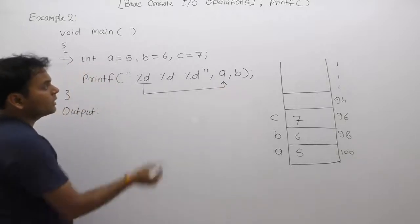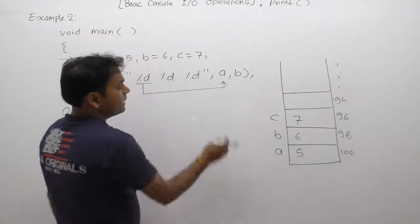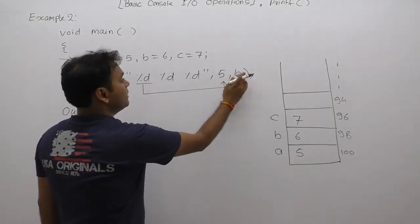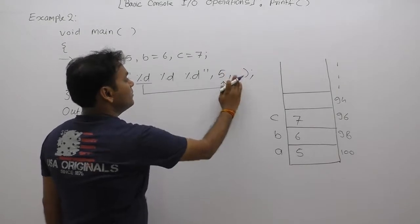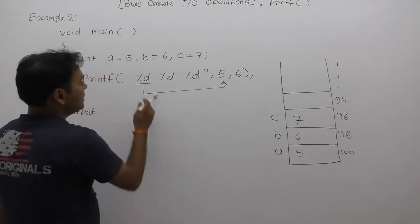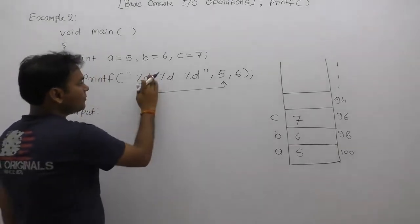According to the diagram and initialization, the value of a is 5. Therefore in that place we are supplying directly 5. The value of b is 6. Therefore in place of the first %d we are replacing with 5.